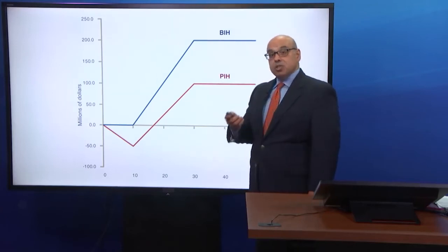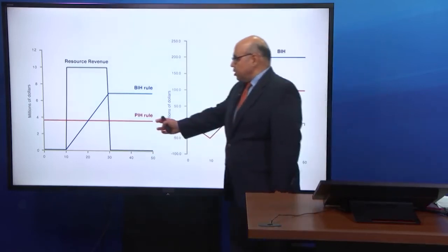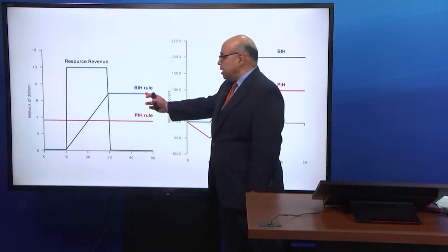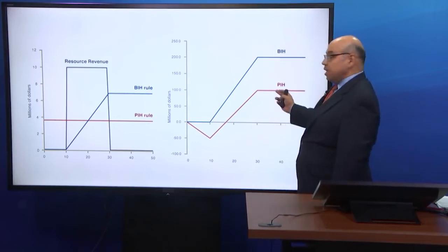Putting the two together, under PIH you have a constant consumption path but you spend less than under BIH. As a result, BIH has more savings than PIH. In sum, Bird-in-Hand is a more conservative rule — it results in less spending and more saving. BIH is fiscally sustainable like PIH, and it delinks spending from commodity price volatility, but it may not be suitable for countries with little assets and large spending needs. BIH is practiced by Norway, which has one of the largest sovereign wealth funds in the world.